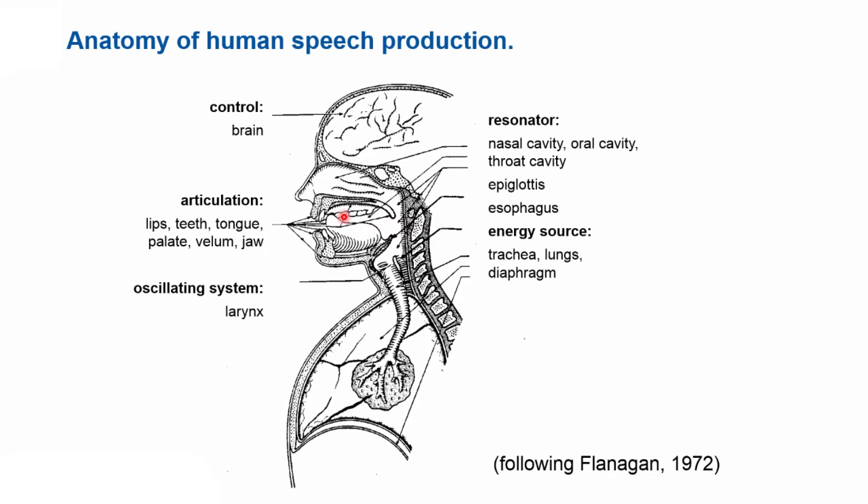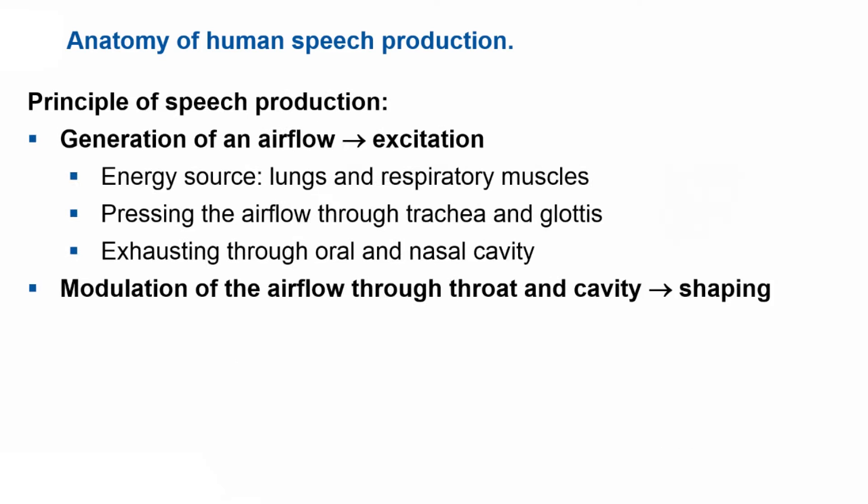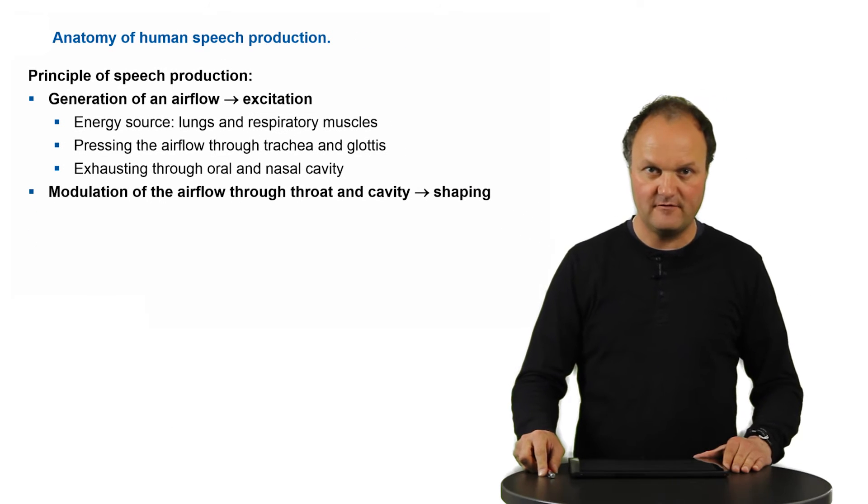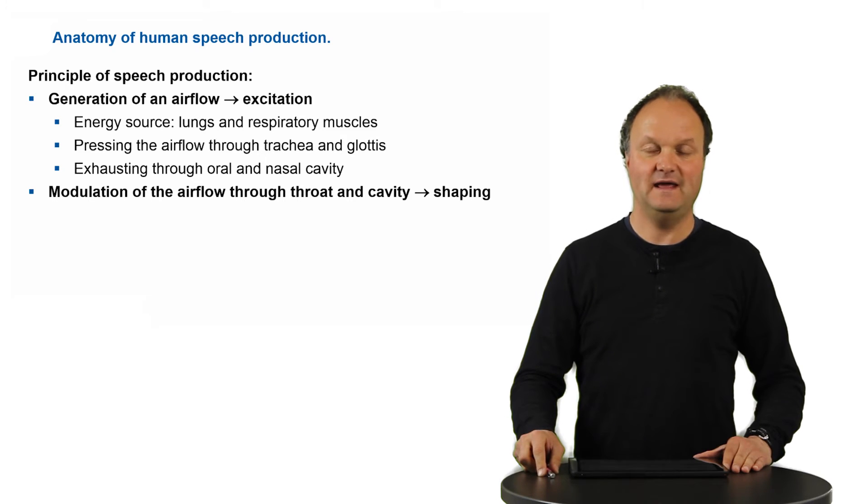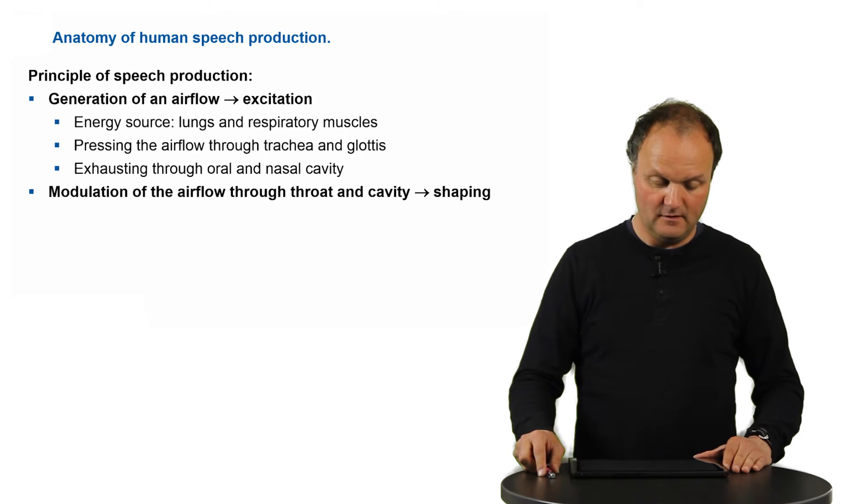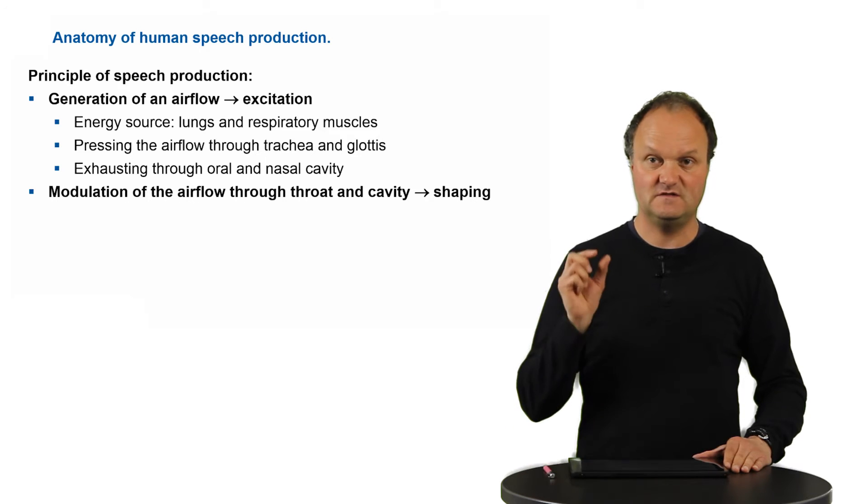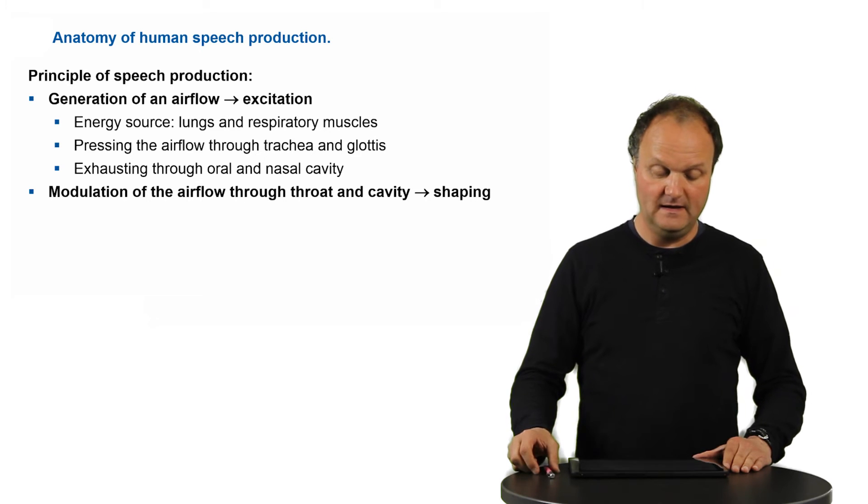All this needs to be controlled and the control unit is of course the human brain which you see here. Now the speech production process can then be summarized in two steps. The first is the generation of an air flow, that is called an excitation signal, through the lungs which serve as an energy source, by pressing air through the trachea and through the glottis which is the opening in the larynx and then exhausting it through the oral and nasal cavity.